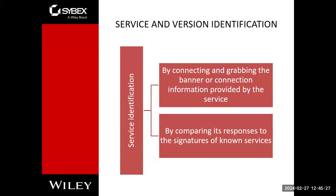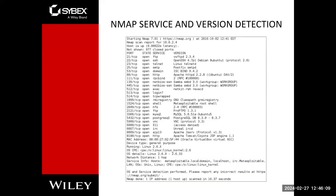If we use dash lowercase s capital V, we can do service and version identification. By grabbing banners or doing other types of methods, we can ascertain what version of software is running on a device — we might be able to determine what version of IIS or Apache is running. By comparing its response, we might be able to figure out different signatures of that application as to whether it is vulnerable or not. Here's a typical NMAP service scan, and it picks up all these different ports and provides the version of each individual service.